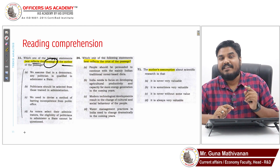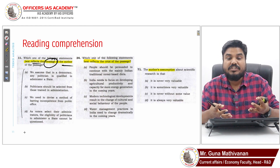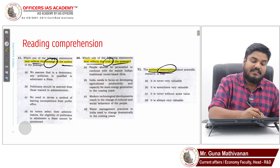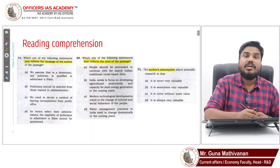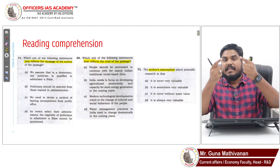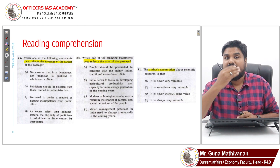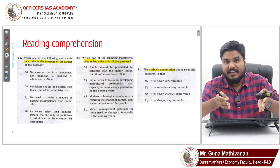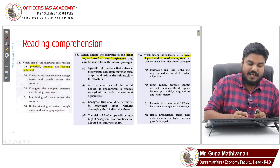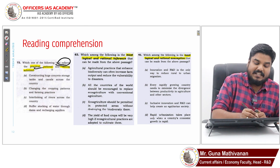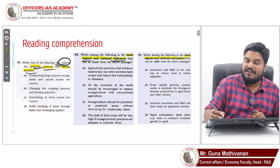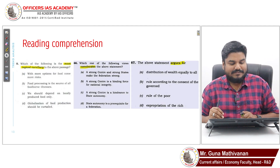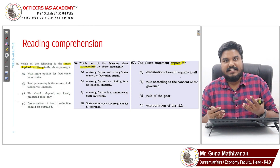In the second category — 'best reflects the crux,' 'author's assumption,' 'logical inference' — you read and understand the passage, then choose an answer based on that understanding. These are assumption-style or extension questions where you extend the passage to find the answer. The first category is direct from the passage; the second category requires you to derive meaning and extend it.